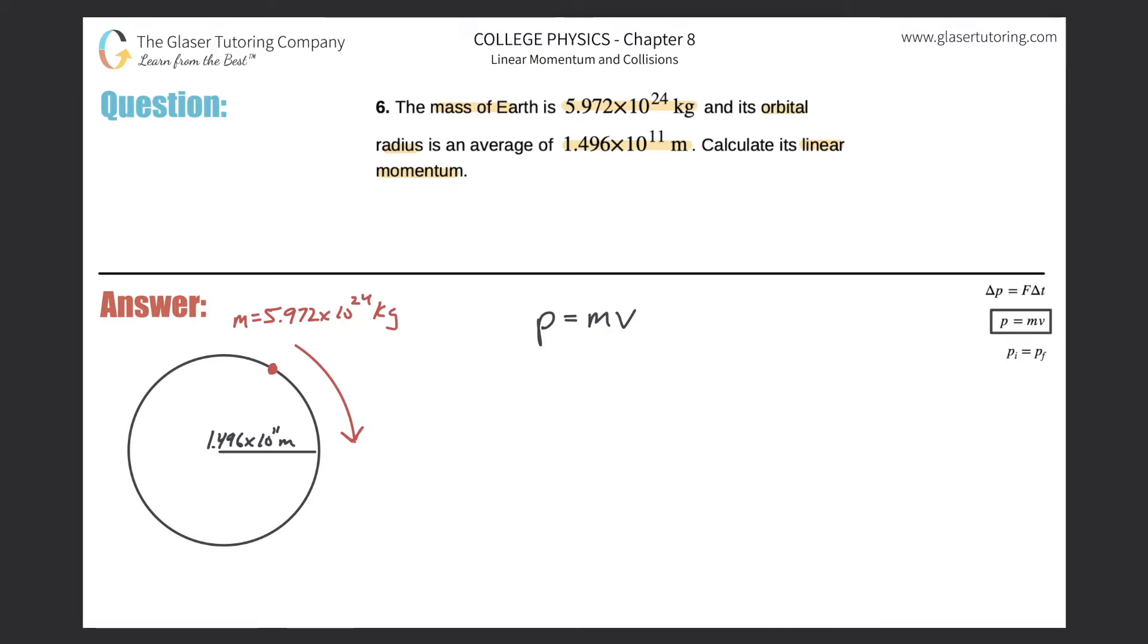We have to remember back to chapter six: how do we find linear velocities given circular motion? We should recall this formula that the linear velocity is equal to the radius of the orbit multiplied by the angular velocity.